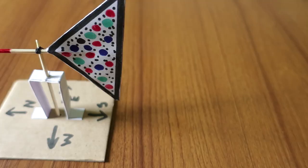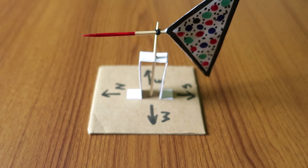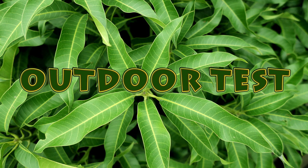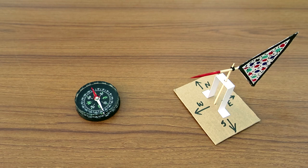Our weather vane is ready for action. Outdoor test. Place the weather vane with compass and line the weather vane north with compass north. By observing the red head, you will gauge the direction of wind.